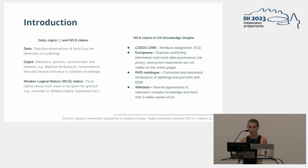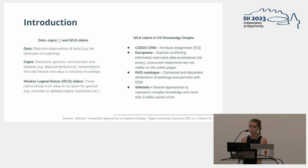Wikidata is the biggest knowledge graph in existence. It is a collaborative platform, and for that reason several approaches have been designed to represent complex knowledge and even concurrent attributions and interpretations. It presents three million works of art in the collection. Surveying all these knowledge graphs and models, we decided to dig deeper into Wikidata, since we think it could picture a nice overview of how critical debate is presented in current knowledge graphs.